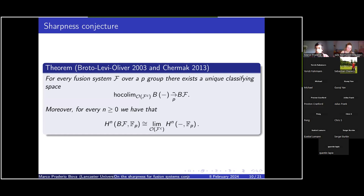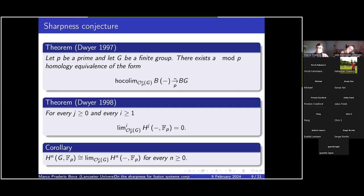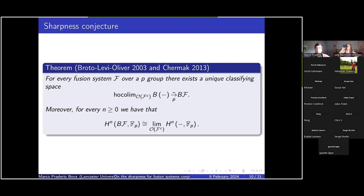Since from this homology equivalence we also obtain a spectral sequence, and since these results could be obtained from that spectral sequence if sharpness held, we kind of expect sharpness to also be satisfied for fusion systems. That, together with the analogy between fusion systems and the p-local structure of finite groups, gives us good reason to believe the sharpness conjecture. It's just an indicator, not a proof.